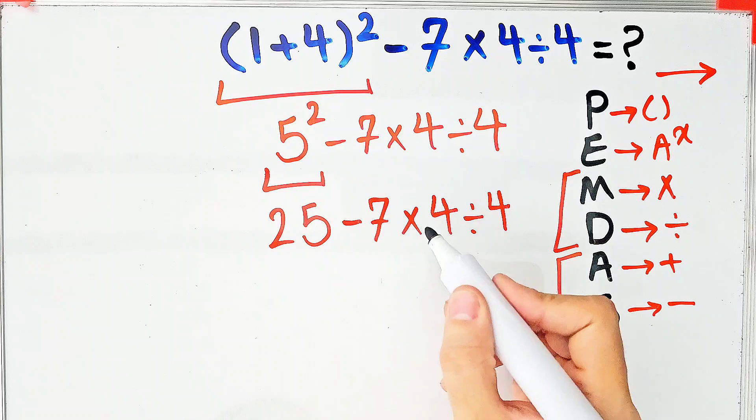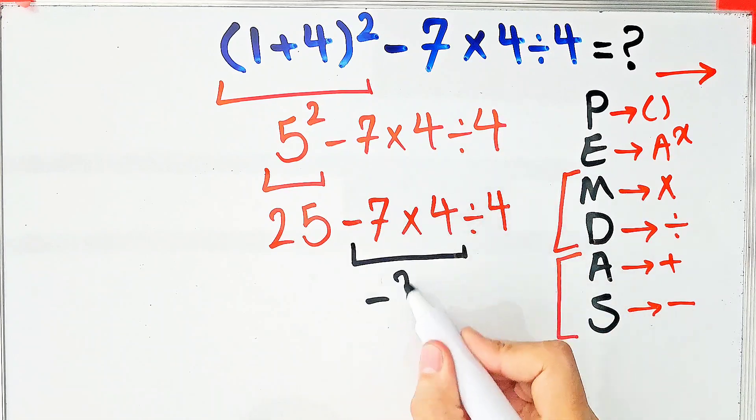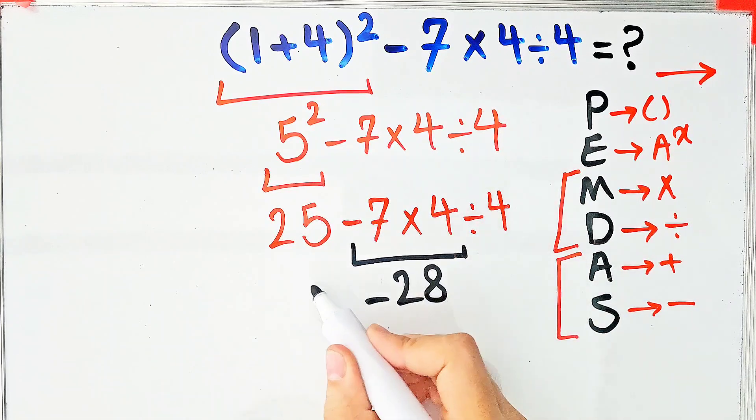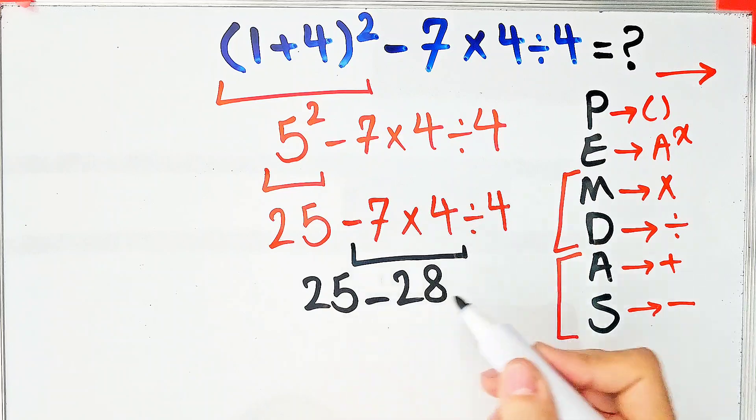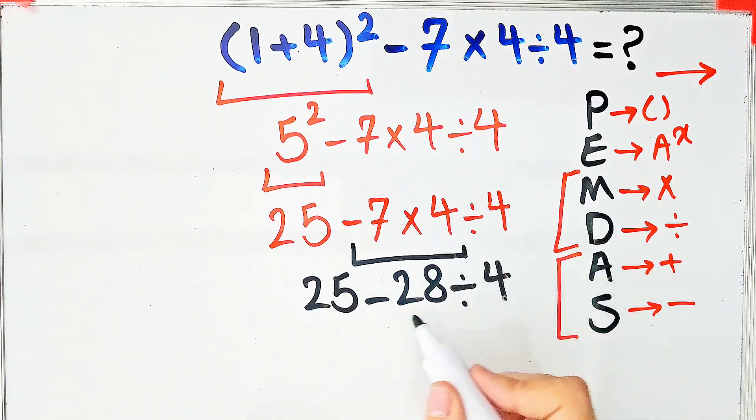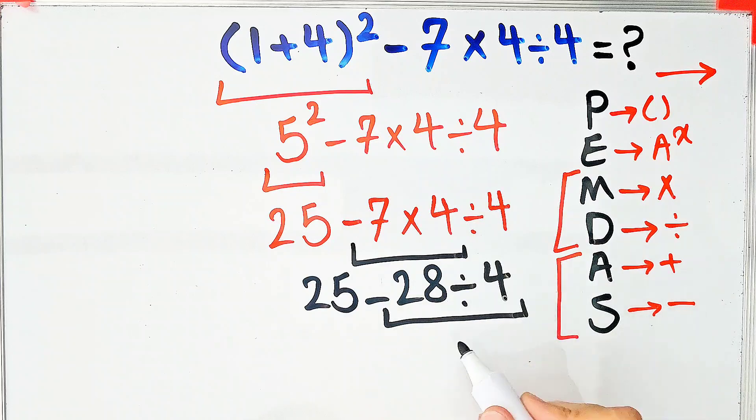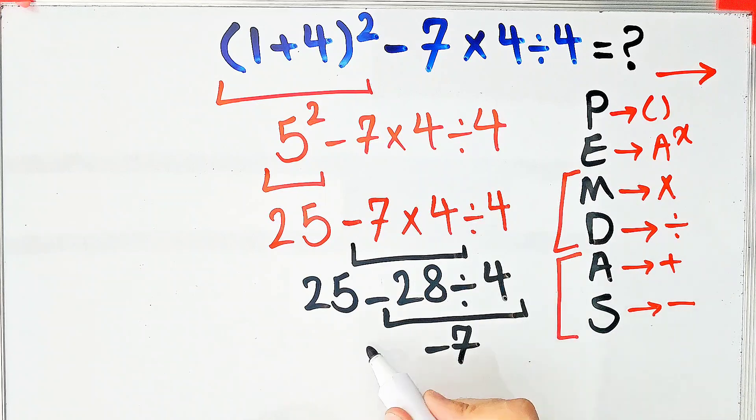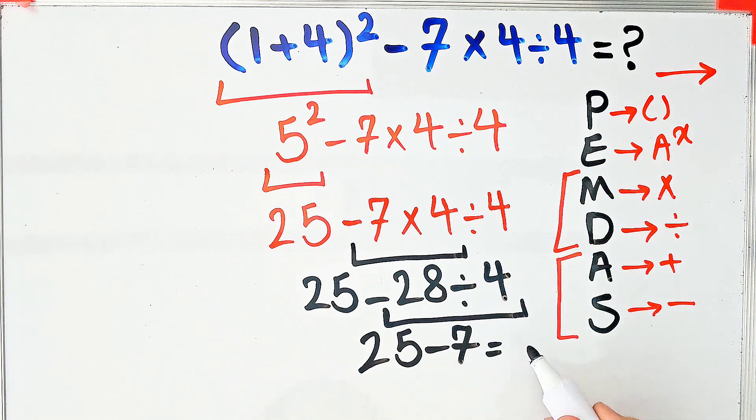28 divided by four equals seven, and 25 minus seven equals 18. The final answer of this question equals 18.